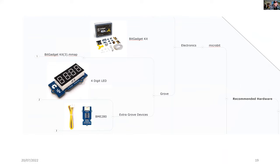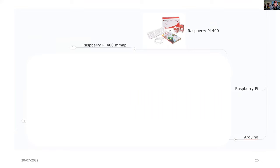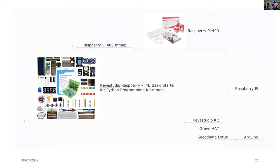I'm recommending that you get Grove electronic modules that can be used with both MicroBit and the Raspberry Pi. The additional modules would be a four-digit LED display and a weather station that can measure temperature, humidity, and pressure — called the BME-280. For Raspberry Pi, they're very hard to get at the moment, but it is possible to get a Raspberry Pi 400. You can use it with a kit for simple electronics and get a Grove hat to connect Grove modules. Perhaps you'd also like to get some more Arduino UNO computers — I'm recommending the Seeeduino Lotus, which will allow you to use the Grove modules.